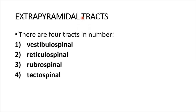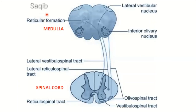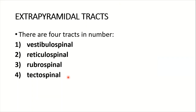There are four important extrapyramidal tracts: the vestibulospinal tract, the reticulospinal tract, the rubrospinal tract, and the tectospinal tract. As you can see in the diagram, there is also one tract whose existence as a separate tract is in doubt, so it will not be discussed today — only these four.